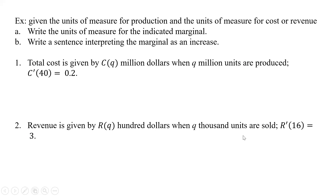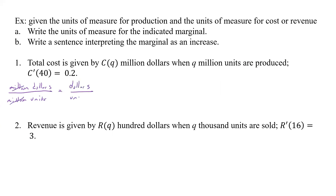Here it says: given the units of measure for production and for cost or revenue, write the units of measure for the indicated marginal. The total cost is in millions of dollars, and Q is in millions of units. So the marginal cost is millions of dollars per million units. Since million appears in both numerator and denominator, they cancel, giving us simply dollars per unit.